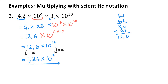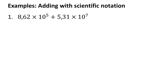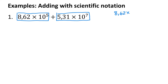If you did this question by expanding both scientific notations and then multiplying them together, you can see it would take a lot more time and might be less accurate because you could make a mistake with all the zeros. The next examples deal with adding. Adding is different from multiplication because when you add, you can only add like terms. Here I have two terms: 8.62 times 10 to the power of 5, and 5.31 times 10 to the power of 7. These are not like terms.